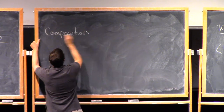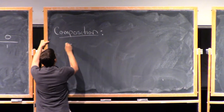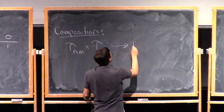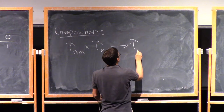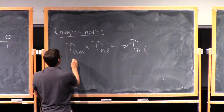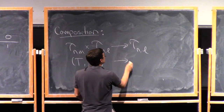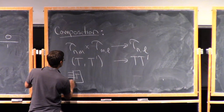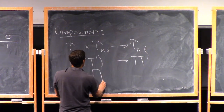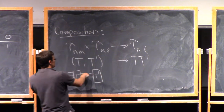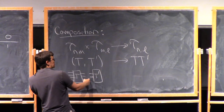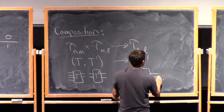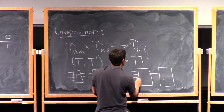So now we can talk about composition. There's a map from τ_{n,m} × τ_{m,l} to τ_{n,l} that sends a pair (T, T') to a tangle T·T'. So maybe T looked like one picture and T' looked like another. The number of ends coming out on the right of T has to match the number of ends coming in on the left of T', and then I just stick them together to get the composed tangle.